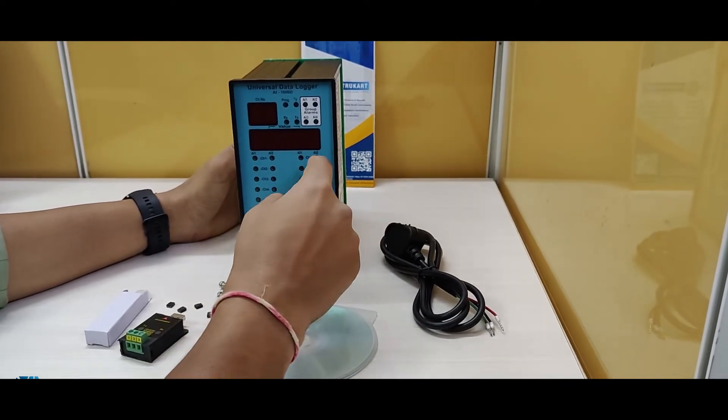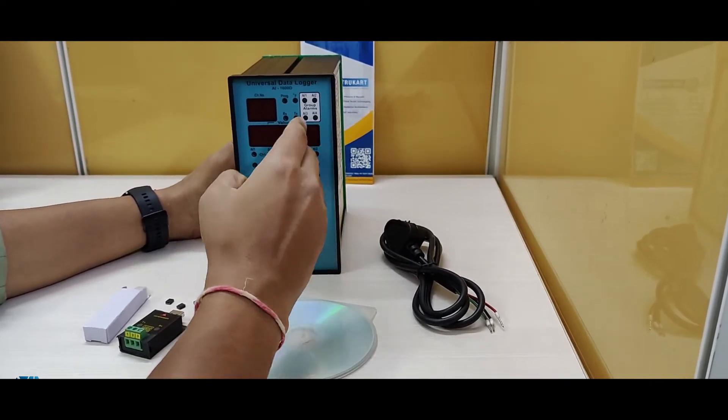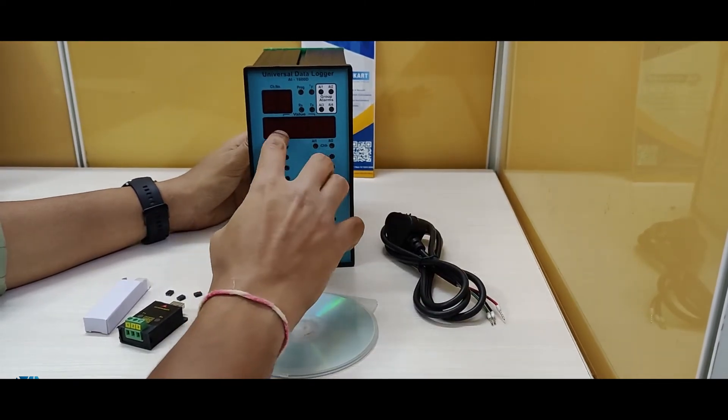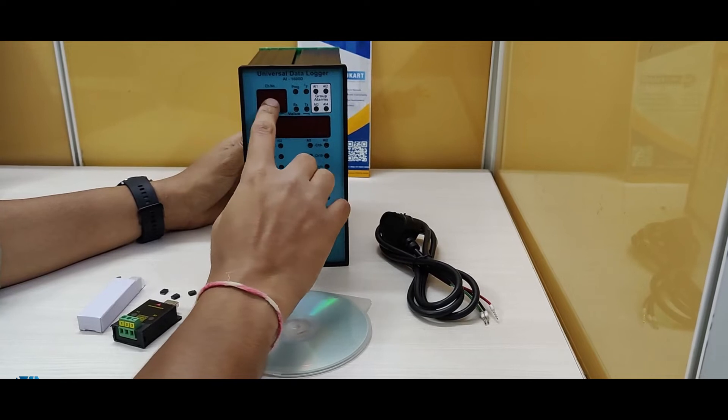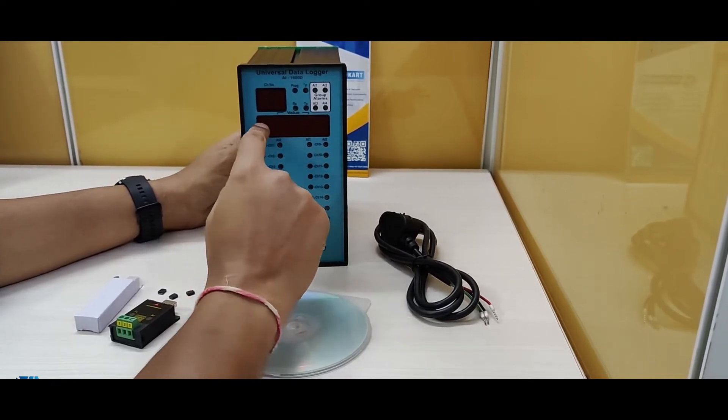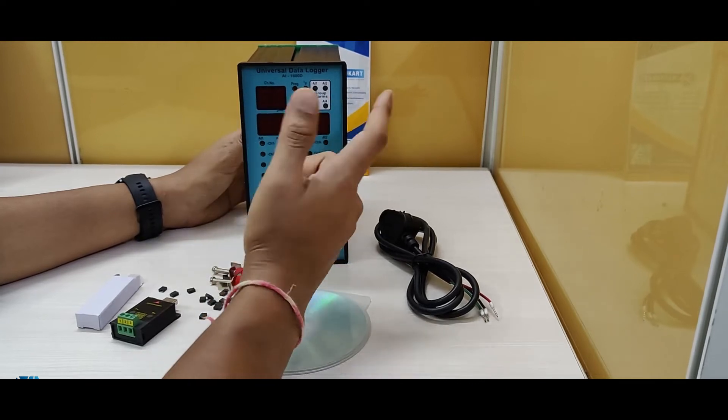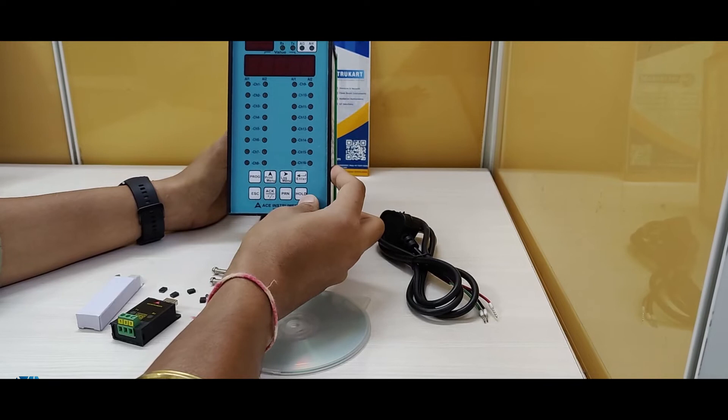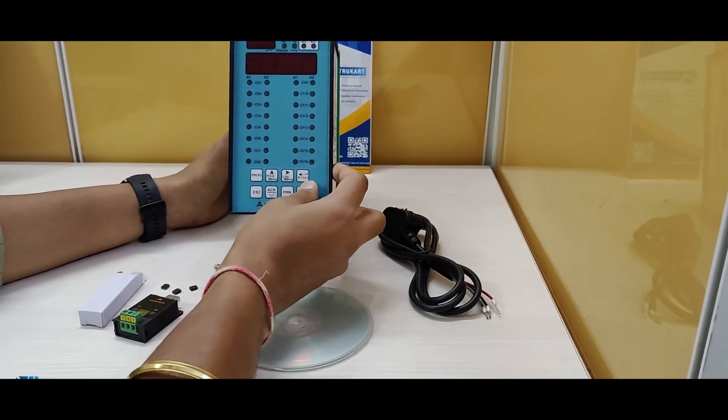Now this can show all the 16 channels simultaneously in this particular device. As you can see, there is one screen which is showing the channel number starting from 1 to 16 and the process value from 1 to 16 on a toggle mode. You have the front 8 keys to navigate.